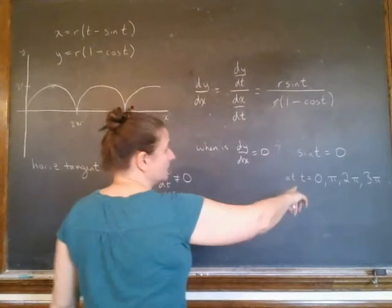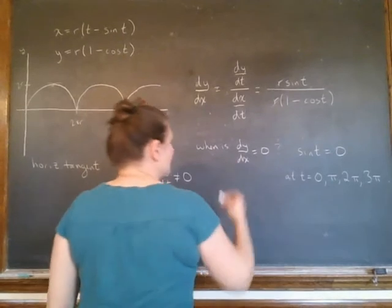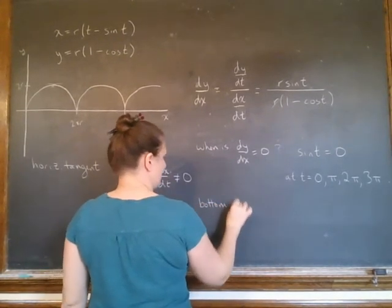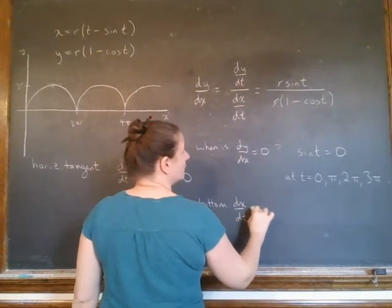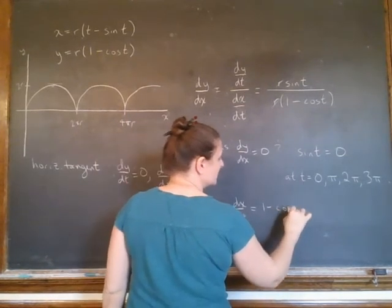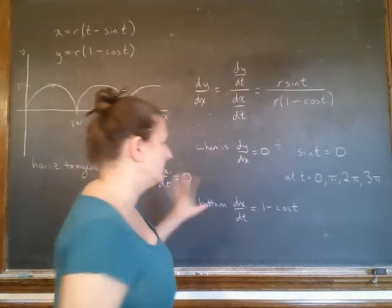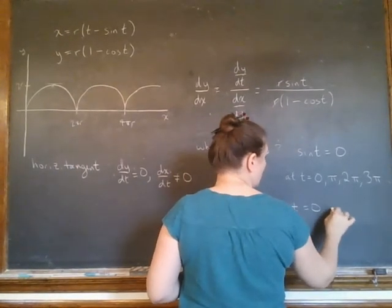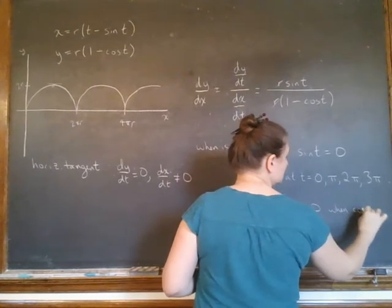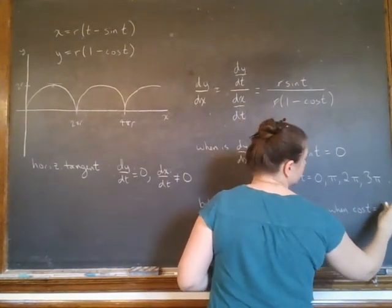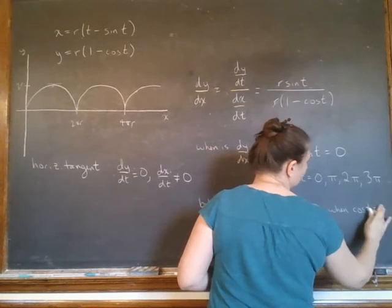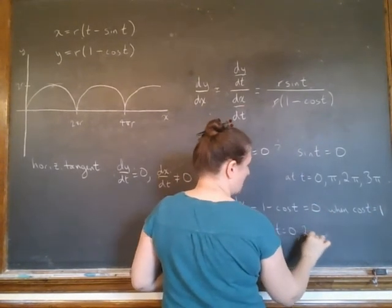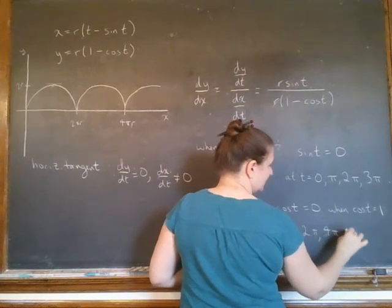So the top is 0 at every value there but my bottom, dx/dt, which was 1 minus cosine t, and of course I've already cancelled out the r, is equal to 0 when cosine t equals 1, for t equals 0, 2 pi, etc.